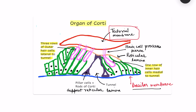There are various kinds of cells in the organ of Corti. There are pillar cells, also known as the rods of Corti. Then there are hair cells of two types — inner hair cells and outer hair cells. There are also supporting cells, shown in green, which have different names.